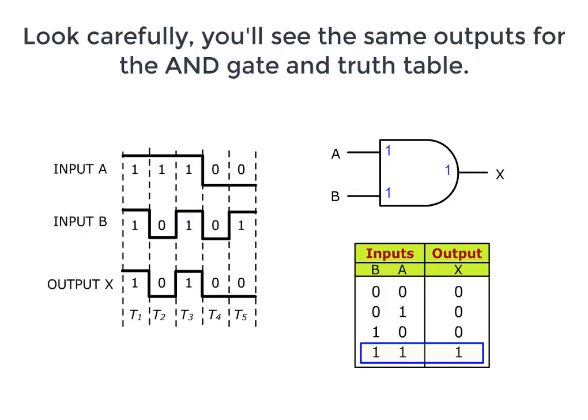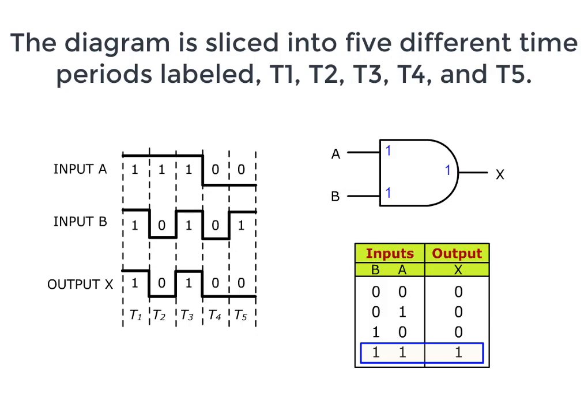Look carefully. You'll see the same outputs for the AND gate and truth table. The diagram is sliced into five different time periods, labeled T1, T2, T3, T4, and T5.